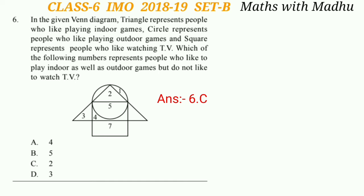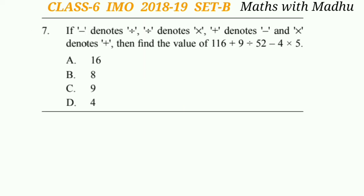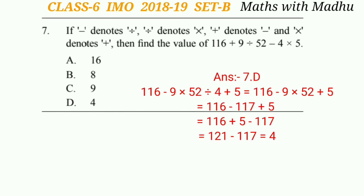Now question 7. If minus denotes division, division denotes multiplication, plus denotes minus, and multiplication denotes plus, find the value of 116 plus 9 divided by 52 minus 4 multiplied by 5. After changing the signs as given, it becomes 116 minus 9 multiplied by 52 divided by 4 plus 5. After solving this we will get 4, so the answer will be option D.